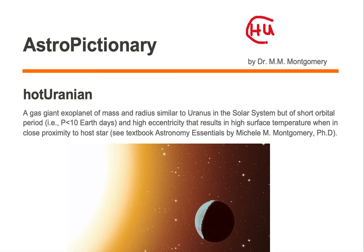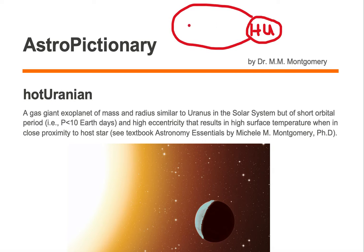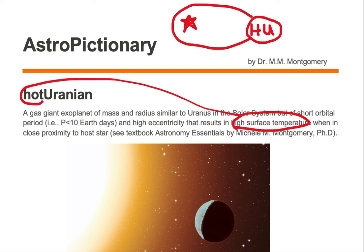This exoplanet is like Uranus in mass and most often in radius, but the key difference is the eccentric orbit of the exoplanet around its host star. The hot Uranian's highly eccentric orbit brings it into close proximity with its host star, resulting in high surface temperature — hence the word 'hot' in the name.